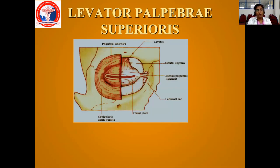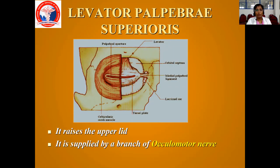Just after the orbicularis muscle, you have the levator palpebrae superioris — LPS. The important action of LPS is it raises the upper lid. The nerve supply is by the oculomotor nerve. What will happen if you have oculomotor nerve palsy? You cannot raise the upper lids and ptosis will happen.